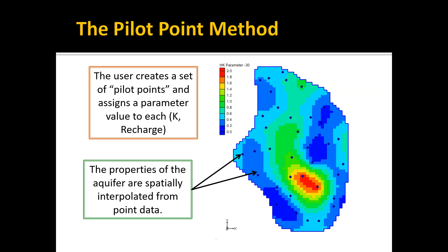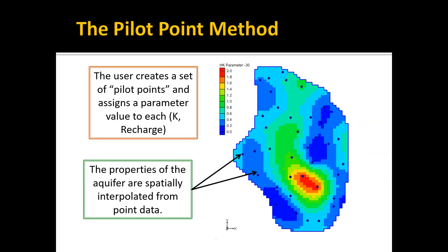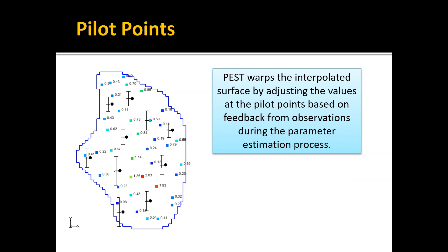During the automated parameter estimation process, PEST warps the interpolated surface by adjusting the values at the pilot points based on feedback from observations. By using a spatial interpolation algorithm, we take these discrete point locations and generate a smooth mathematical surface.